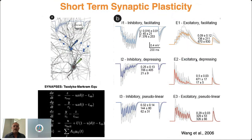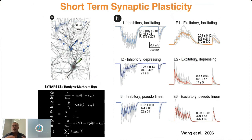As well, the short-term synaptic plasticity was taken into account — really accounting for the fact that each synaptic connection is very dynamic. For certain types of connections, some pathways are facilitating, where the connection strength will get stronger with each presynaptic spike. For depressing connections, they'll become weaker. You have these for both inhibitory and excitatory cells, as well as the pseudolinear response. Mapping those out and bringing those into the different synaptic pathways is really key to capturing the short-term synaptic plasticity.